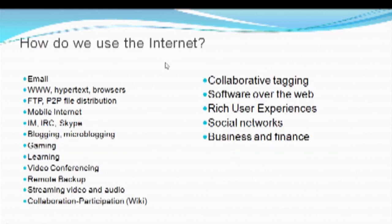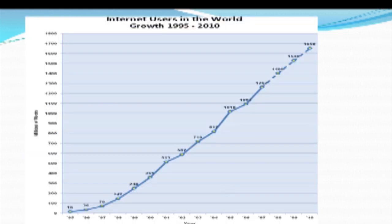How do we use the Internet? These are a few services using which we use the Internet: to share files and messages we use emails, to browse data we use hypertext browsers, to share files we use FTP service. We also use mobile Internet, instant messaging, gaming, learning, video conferencing and so on. These are the few ways where we regularly use the Internet. The graph shows the growth of users who are using the Internet worldwide, from 1995 till 2010.